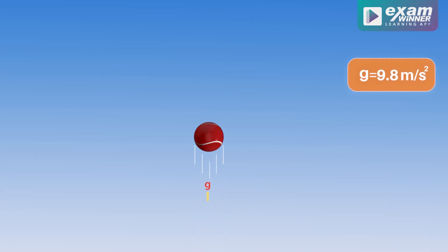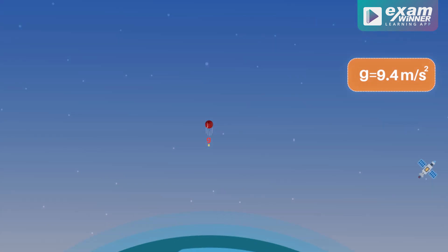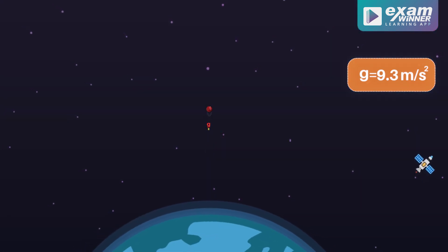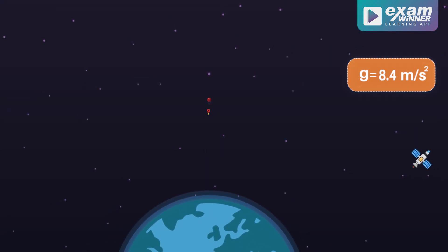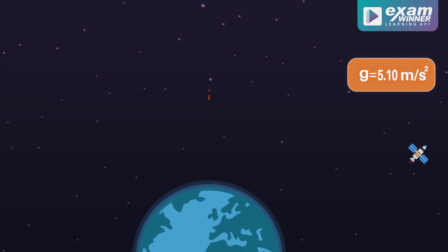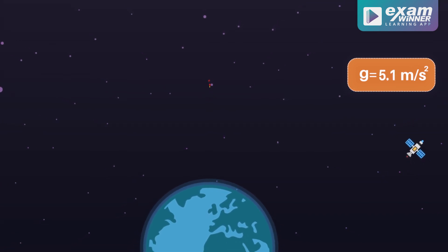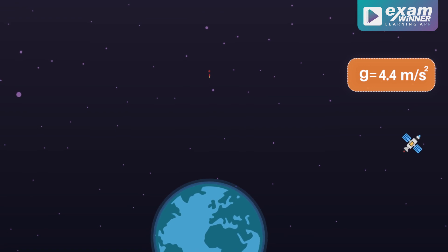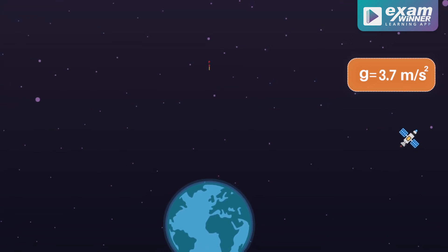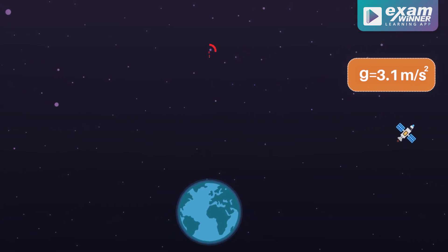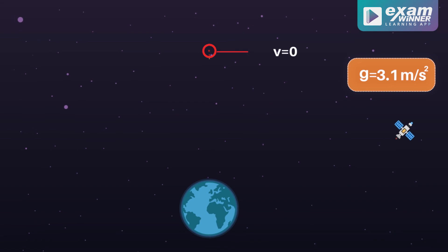If you travel to greater and greater heights, g decreases more and more. So g becomes smaller and smaller. When the height is much bigger, g is very small. If the height is very high, there the velocity becomes 0.